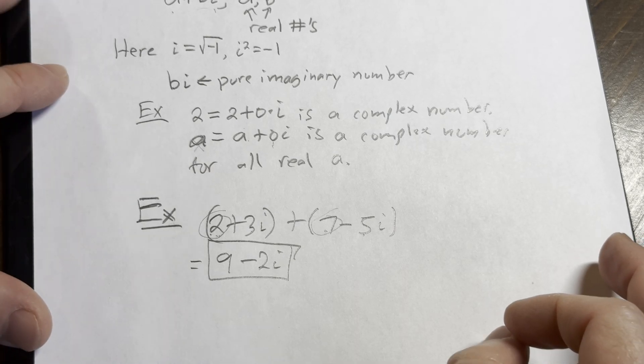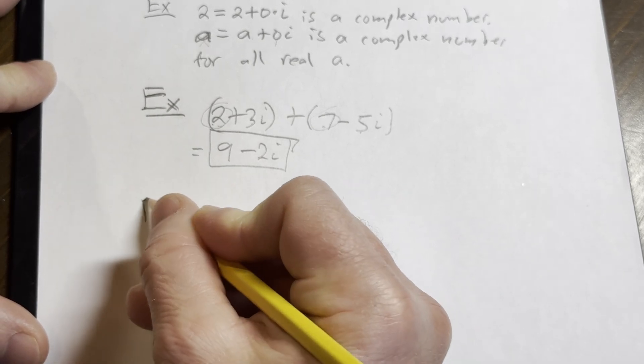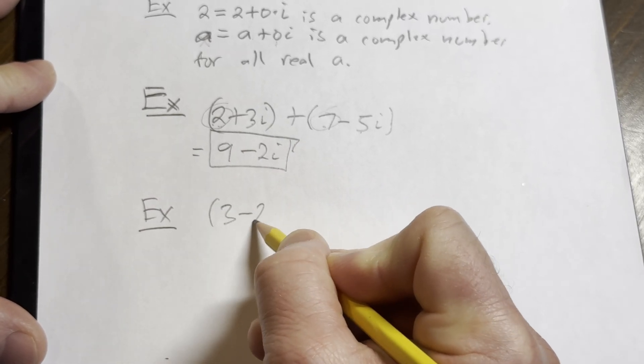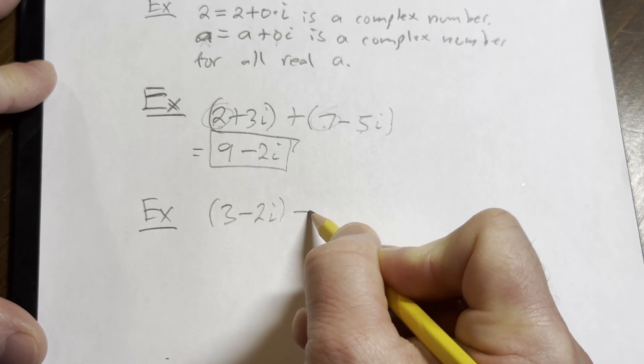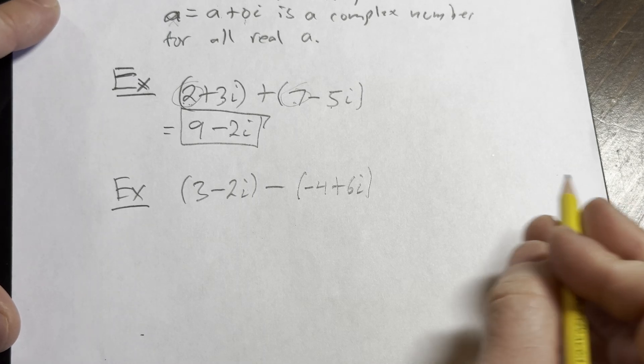So it's super easy to add complex numbers. Subtracting them is a little bit trickier. Let's do an example. Let's take 3 minus 2i minus negative 4 plus 6i. Solution.